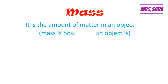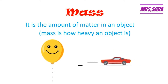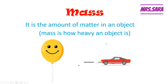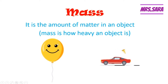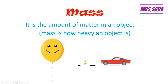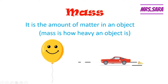Mass is the amount of matter in the object — meaning how heavy the object is. Like a balloon and a car: which one is heavier, the balloon or the car? The car is heavier than the balloon, because the amount of matter in the car is more than the amount of matter in the balloon. The balloon is light and the car is heavy. So mass is the amount of matter in the object, or how heavy the object is.